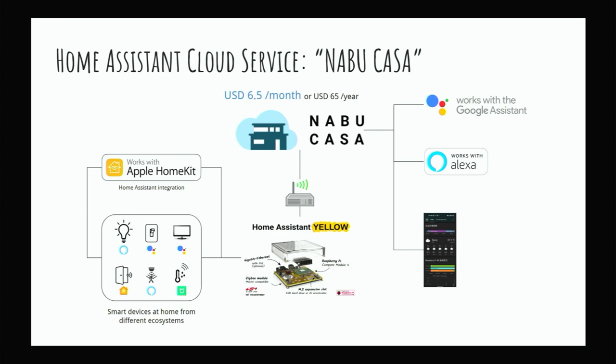So it works like this. You have a Raspberry Pi or some other computer. You can also buy a product from the Home Assistant team — they recently launched a hardware called Yellow, which is also based on a Raspberry Pi compute module. You can actually run a lot of integrations locally, with Apple HomeKit support as well. If you want to use some cloud features, they also have a Nabu Casa cloud that you can subscribe to. It's only $6.50 US per month or $65 US per year. By using their cloud, you can actually integrate with Google, Alexa, and other mobile apps.